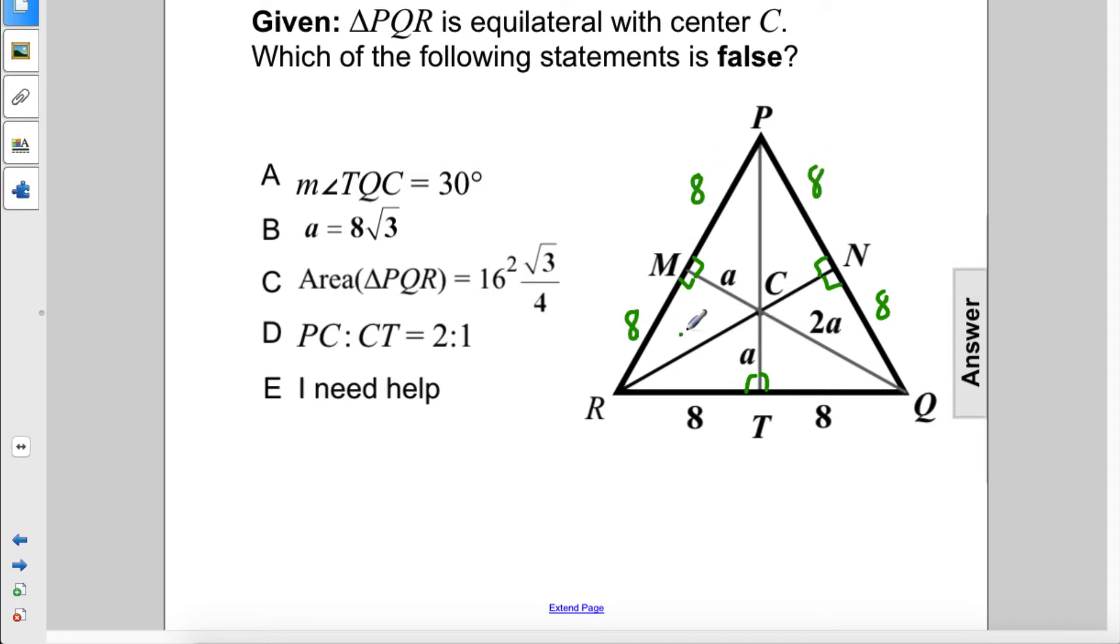And the hypotenuse is 2A, so 2A is here as well, and 2A is here as well. We know that this angle here is 60 degrees, since we have 6 central angles. So 360 divided by 6 is 60 degrees, which makes this angle 30 degrees, since this is a 30-60-90 triangle.